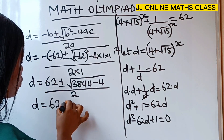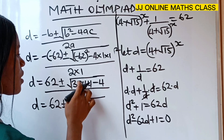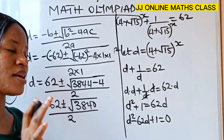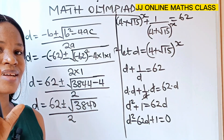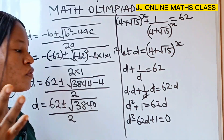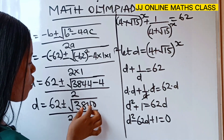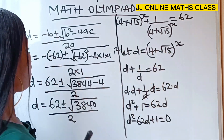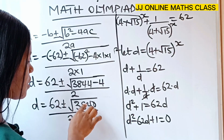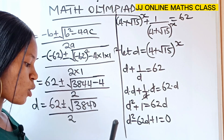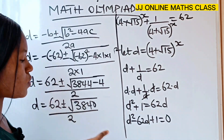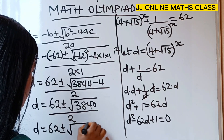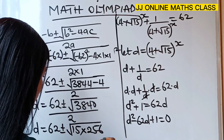So d is equal to 62 plus or minus square root of 3840, divided by 2. I want to have root 15 in the expression because we've been working with 4 plus root 15 and 4 minus root 15. So let's check: 3840 divided by 15 gives us 256, and 15 times 256 equals 3840. So we can rewrite this as d equals 62 plus or minus square root of 15 times 256, all divided by 2.